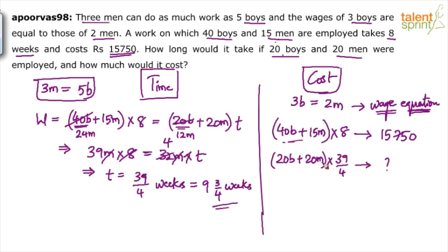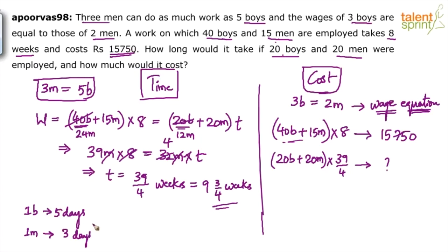Although the same work is done, the costing depends on what type of people you have. For example: one boy can do a work in 5 days, and one man can do the same work in 3 days. The boy charges 20 rupees per day — in 5 days you pay him 100 rupees. The man charges 50 rupees per day — in 3 days you pay him 150 rupees. Because they charge differently, the amount paid for the same work is different.